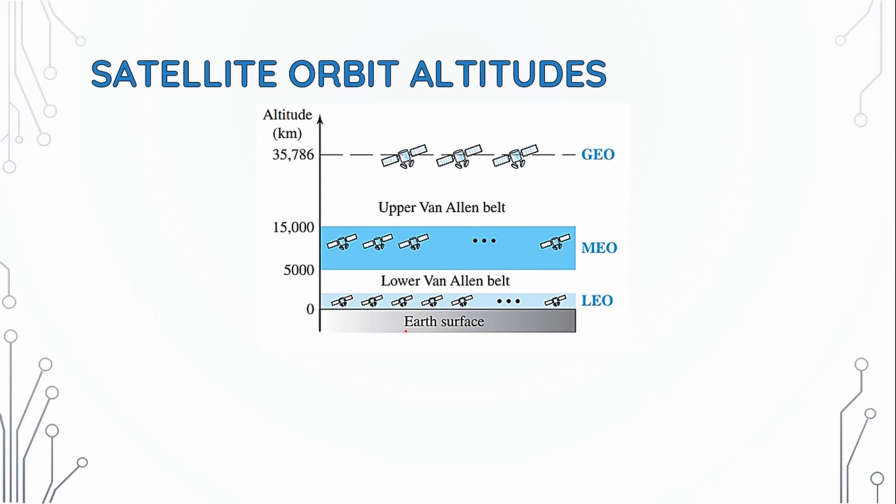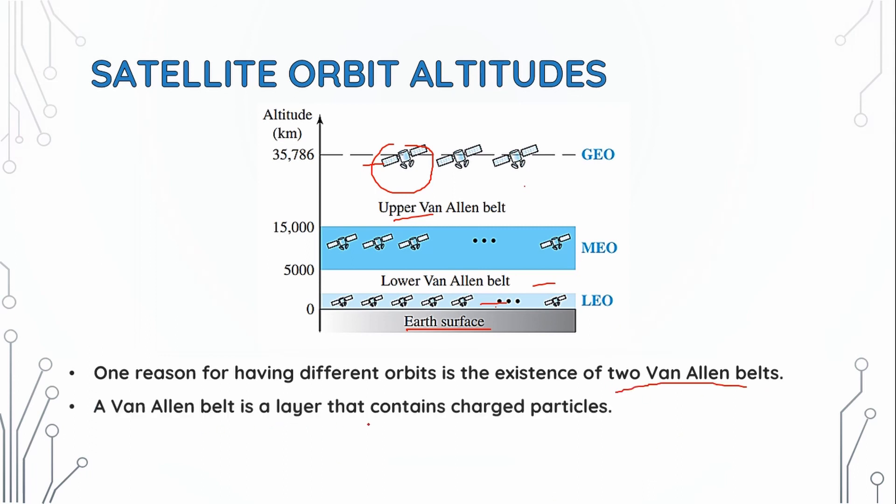Satellite orbit altitudes. One reason for having different orbits is the existence of two Van Allen belts. A Van Allen belt is a layer that contains charged particles. The MEO orbits are located between these two belts.